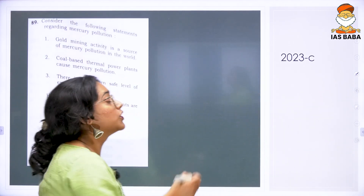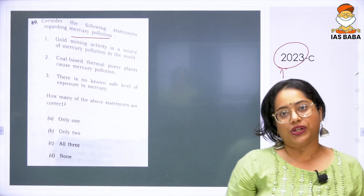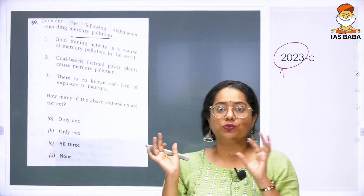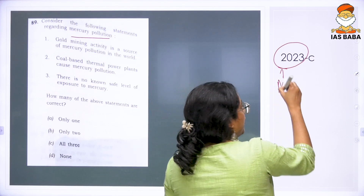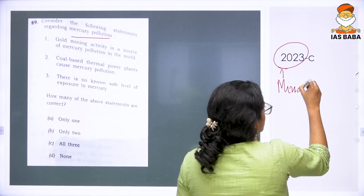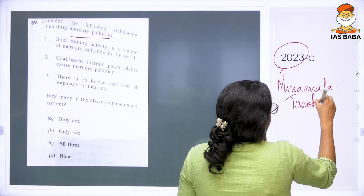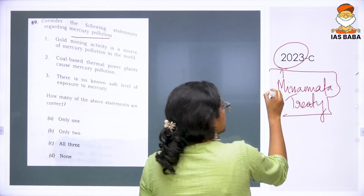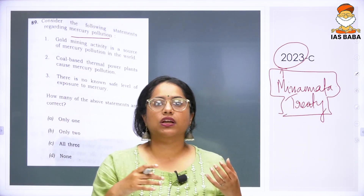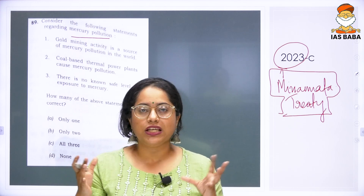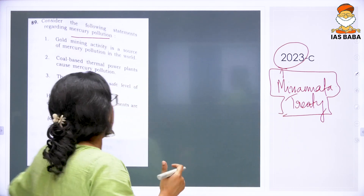Moving forward, we have to talk about mercury pollution. This is a 2023 question. Mercury pollution was a problem we tackled through certain conventions and treaties — one very famous convention called the Minamata treaty. Nevertheless, mercury pollution is still seen, not at the pollution level, but the production and transport of mercury are still happening on small scales.